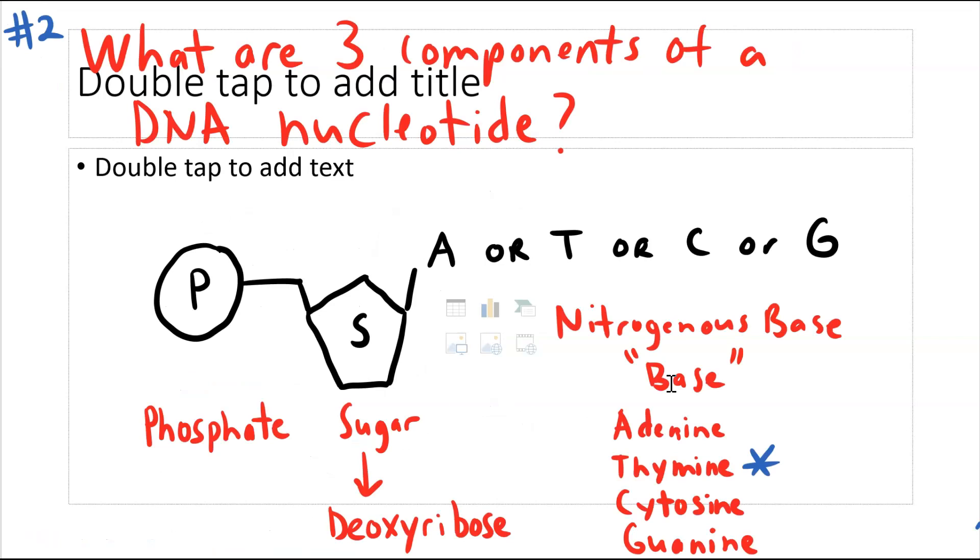Question two asks about the components of the DNA nucleotide. So it's important to emphasize DNA nucleotide. For any nucleotide, generically speaking, you have a phosphate and a sugar. But when it comes to talking about the DNA nucleotide, the sugar is deoxyribose.